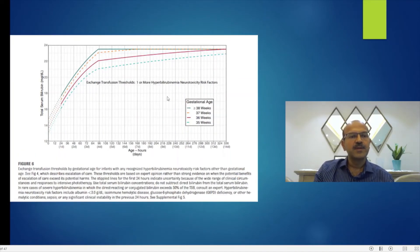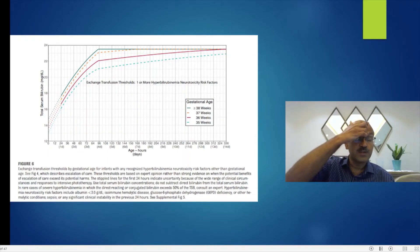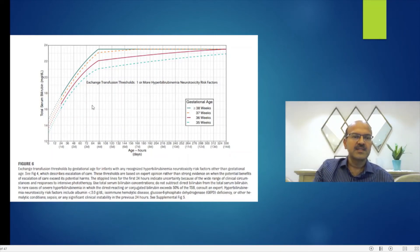This is the one with neurotoxicity risk factors again for 35, 36, 37 and more than 38 weeks. They don't really discuss babies under 35 weeks, and most of us follow the NICE UK charts where we have separate charts for the babies for each gestation from 23, 24 weeks onwards. For babies above 35 weeks, the AAP charts are better.